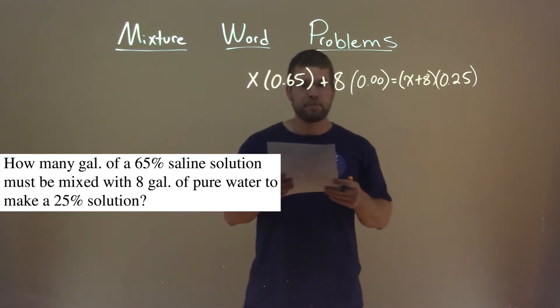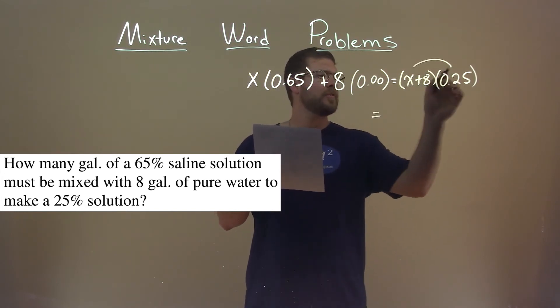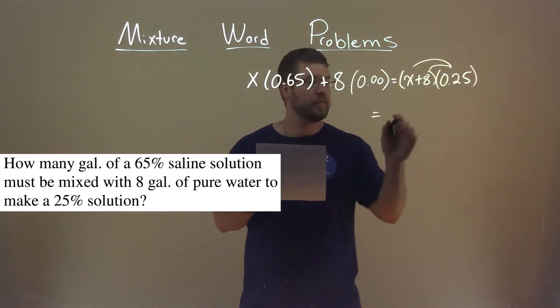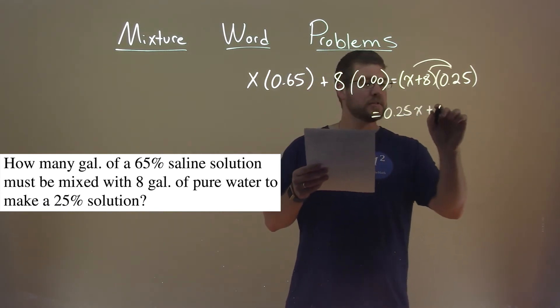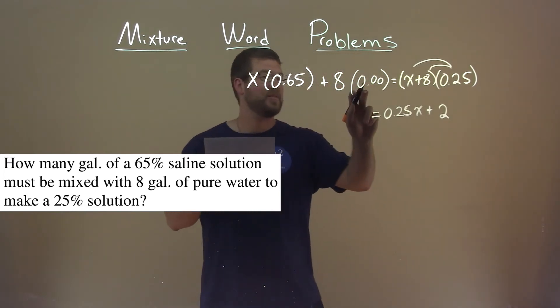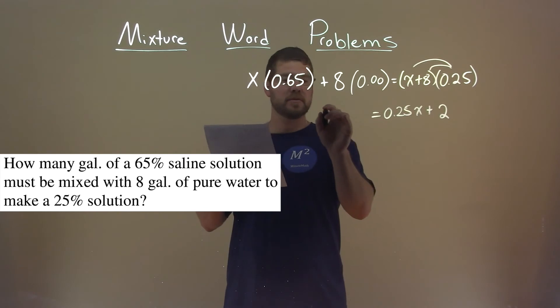Well, let's just simplify where we can. So, what I'm going to do here, I'm going to distribute the 0.25 to both parts. We have 0.25X plus 8 times 0.25, which is 2. 8 times 0 is just 0. Don't need to write that. So, we have, let's go rearrange this,